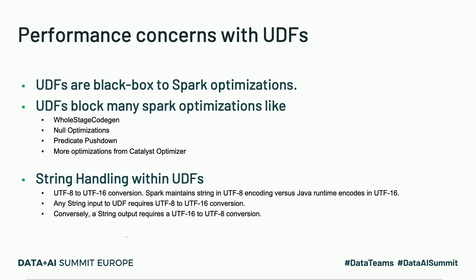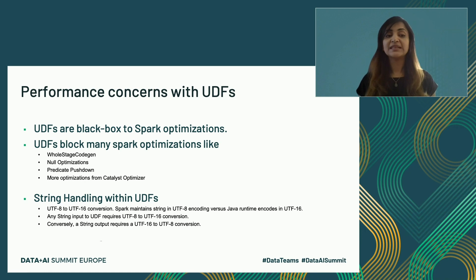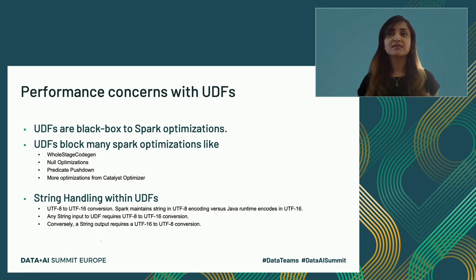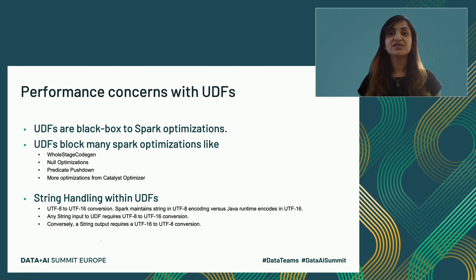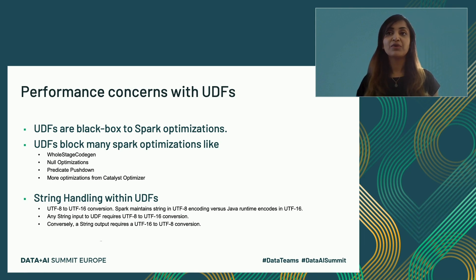At Informatica, we extensively utilize UDFs. We have our own expression language and these functions are not available natively with Spark, so we decided to go the UDF route. But as we started looking at the performance of our application, we realized there were several performance bottlenecks with UDFs. Spark optimizer has evolved from version 1.6 to 3.0 with a lot of optimizations added, but we could not utilize those — things like whole stage code gen, null optimization, predicate pushdown — everything was getting blocked. Also, Spark treats its strings as UTF-8, but when you exercise a UDF it gets converted into Java runtime using java.lang.String, which uses UTF-16 encoding. Going back and forth between UTF-8 and UTF-16 is an expensive operation, so any string input or return type added cost to your UDFs.